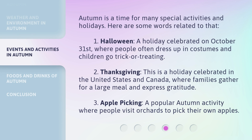Autumn is a time for many special activities and holidays. Here are some words related to that. 1. Halloween: A holiday celebrated on October 31st, where people often dress up in costumes and children go trick or treating. 2. Thanksgiving: This is a holiday celebrated in the United States and Canada, where families gather for a large meal and express gratitude. 3. Apple picking: A popular autumn activity where people visit orchards to pick their own apples.